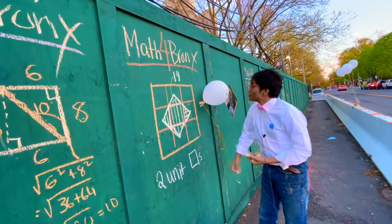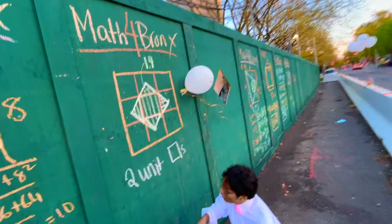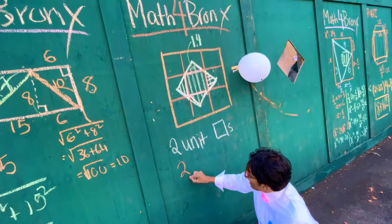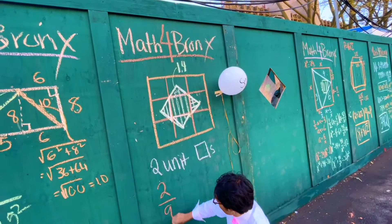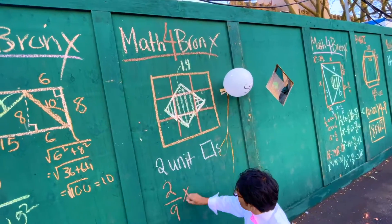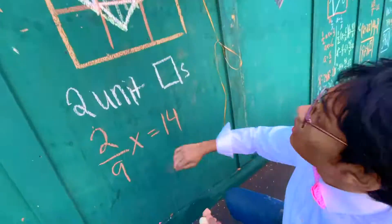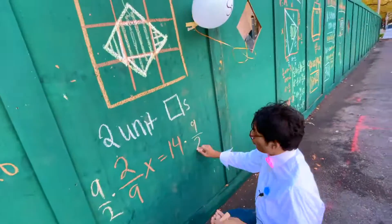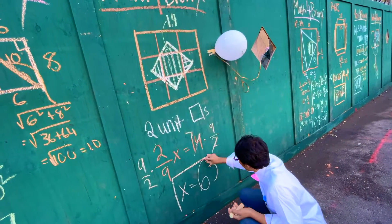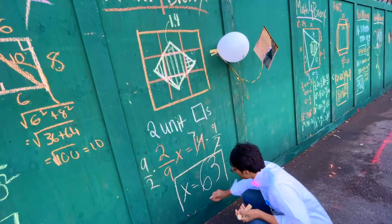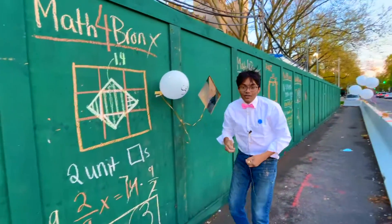So we got two unit squares shaded in, and that has an area of fourteen. So two over the whole nine squares, small squares, times x equals fourteen. And that, ladies and gentlemen, is how you find the area of this particular square.